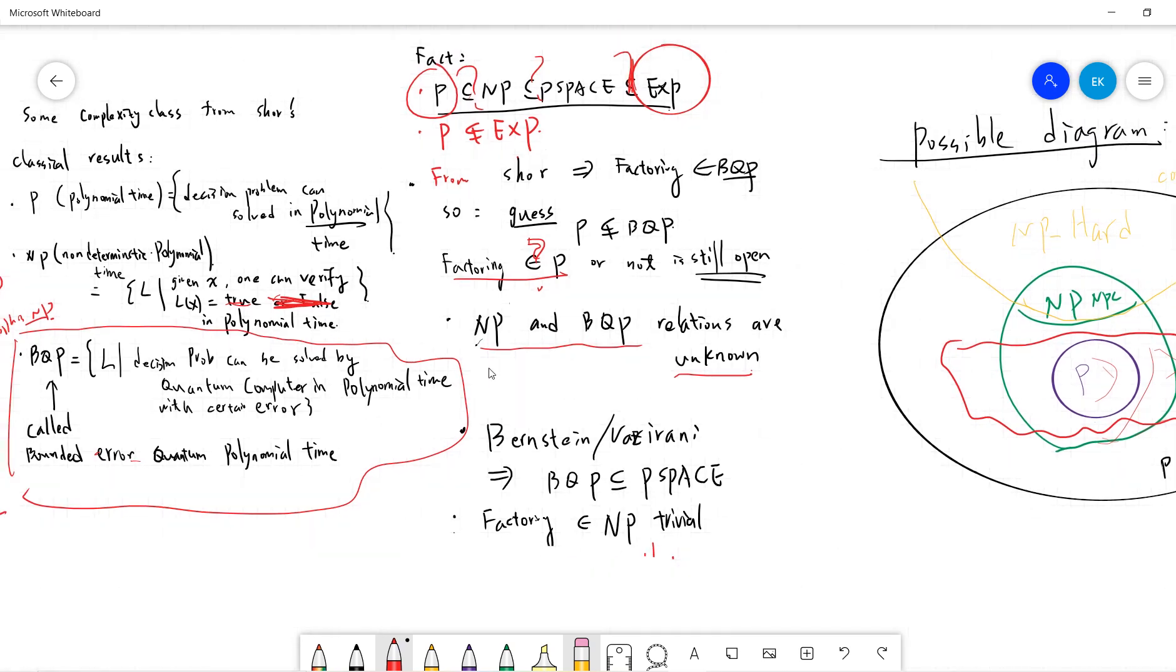One can also prove that factoring is in co-NP. The reason is that if you can prove that something is, if you want to show one integer divides another integer, just divide it. And if you want to show it's not, just divide it.